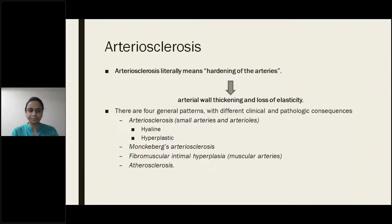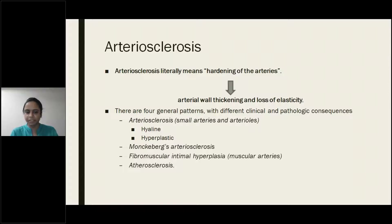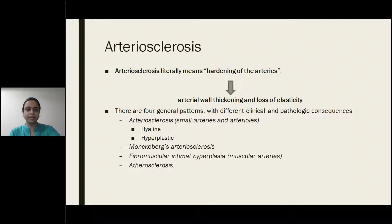The four patterns are: arteriosclerosis, Monckeberg's arteriosclerosis, fibromuscular intimal hyperplasia, and atherosclerosis. As you already know, atherosclerosis is the formation of fatty plaque on the walls. And Monckeberg's I am going to discuss right now.